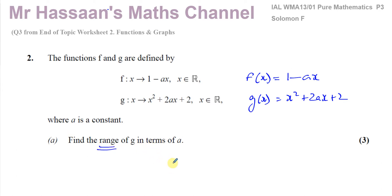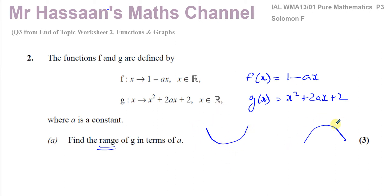The range of a function is the possible y values it can have. G is a quadratic function, and a quadratic function has either a minimum or a maximum point — it has either a U-shape or an inverted U-shape. Since the coefficient of x squared is positive, this will be a smiley face shape with a minimum point.